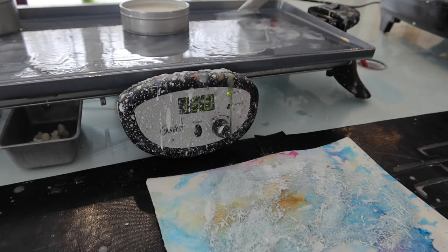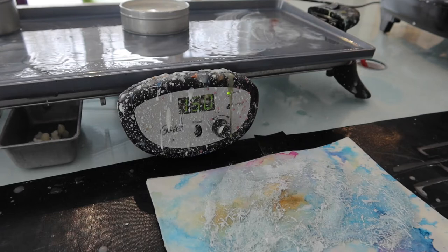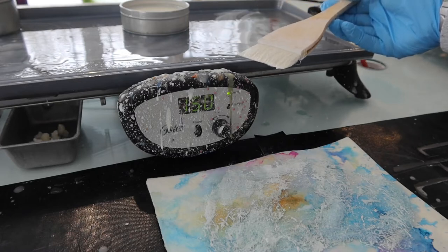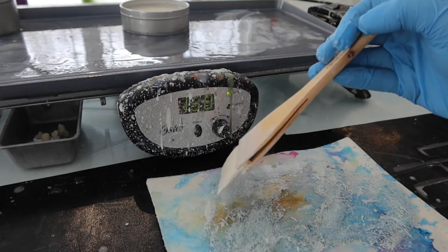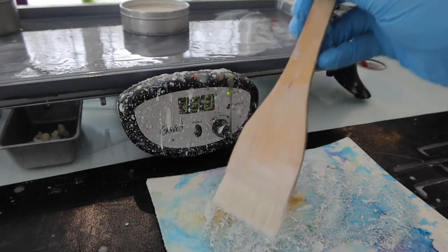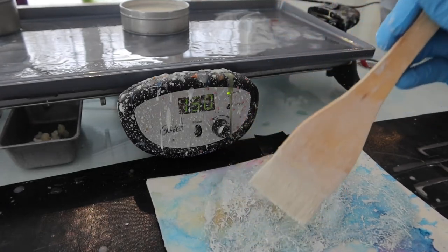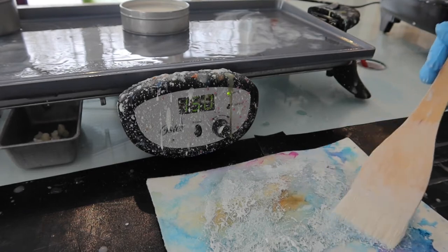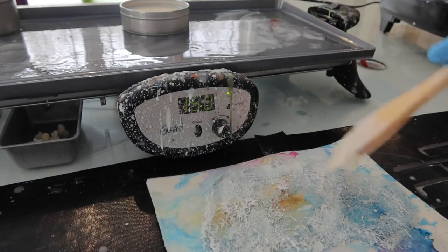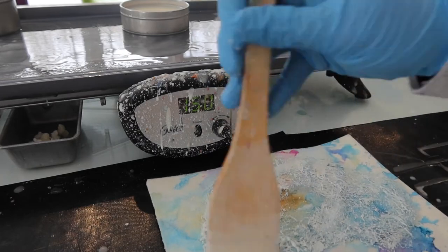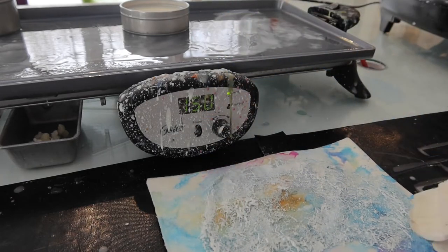And then up next you'll see I do what I would call kind of a dry brushing technique where I let the paint cool off on the brush just a bit, just for a couple seconds. And then I lightly, really gently, go over the raised areas of the roving. And this just puts it in those highlighted raised areas and adds a little extra oomph to the texture, if you will. Kind of brings that out nicely.